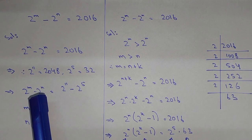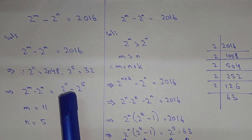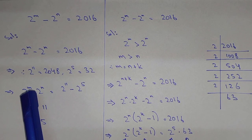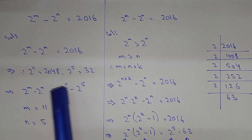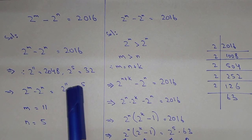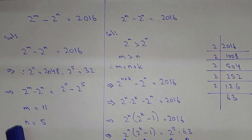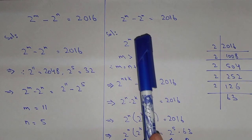Here, 2 power m minus 2 power n equals 2 power 11 minus 2 power 5, which means m is equal to 11 and n is equal to 5. So we can say that m is 11 and n is 5. That's pretty straightforward and simple.